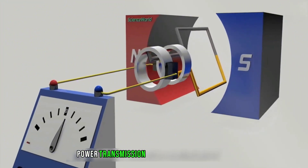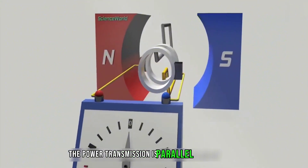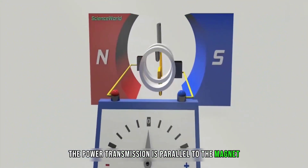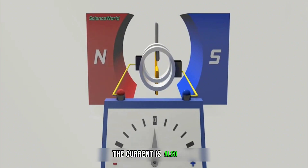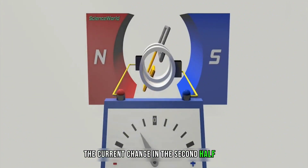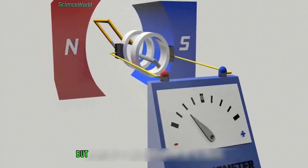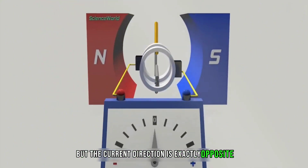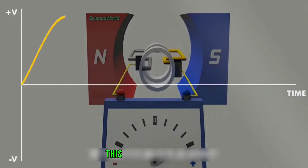When the coil reaches the bottom and is parallel to the magnet, the rate of change of the magnetic flux is zero, and the current is also zero. The current change in the second half of the cycle is the same as in the first half, but the current direction is exactly opposite. The curve of the entire cycle looks like this — this is alternating current.